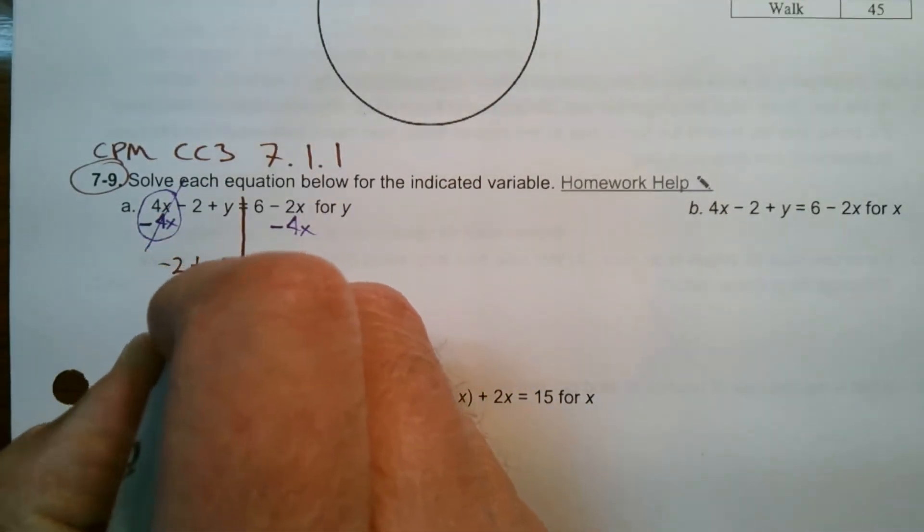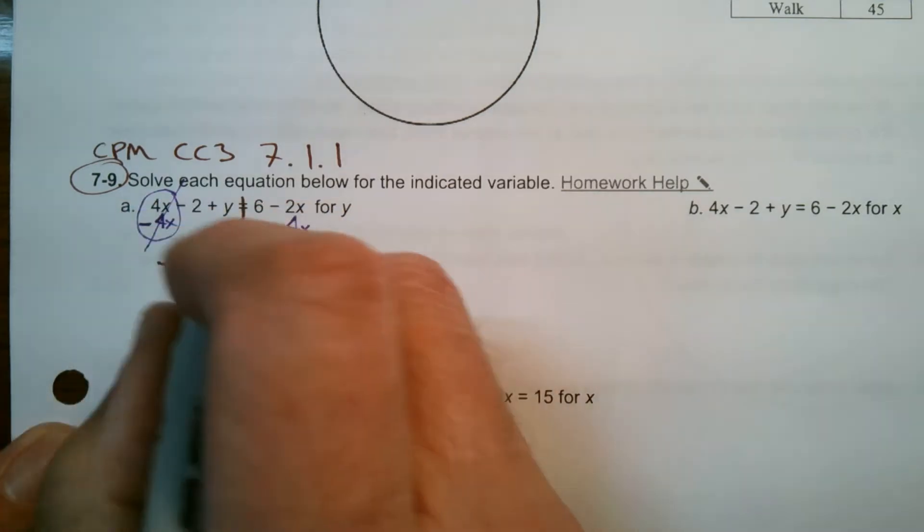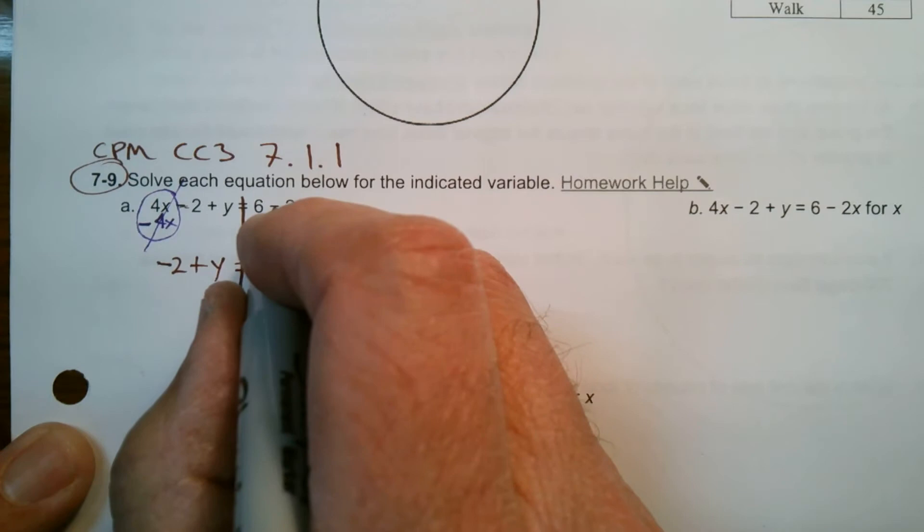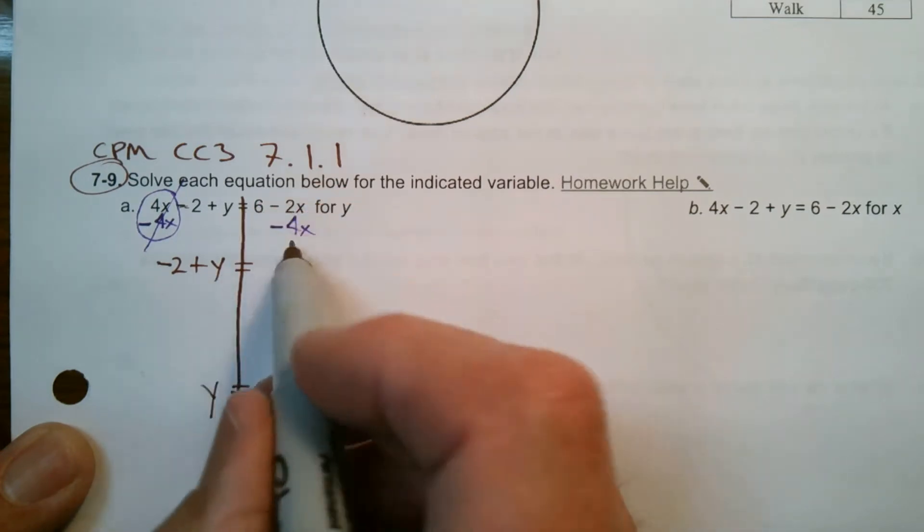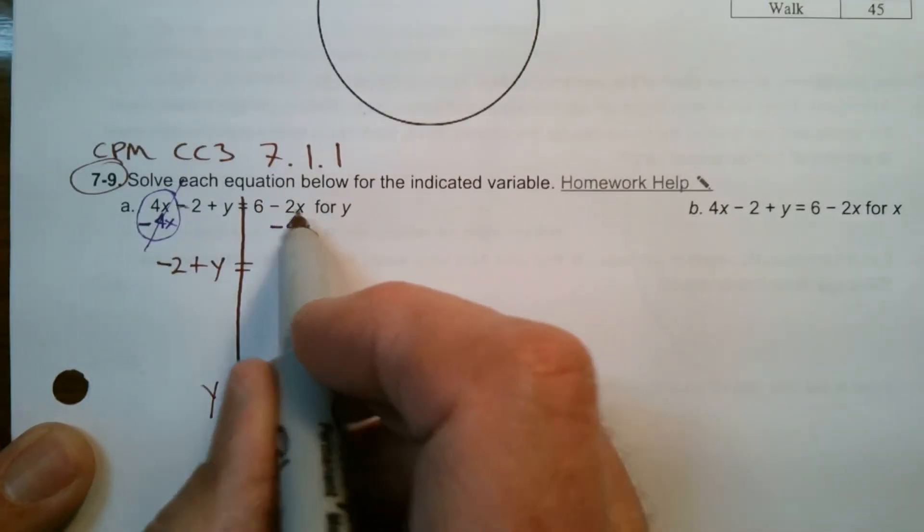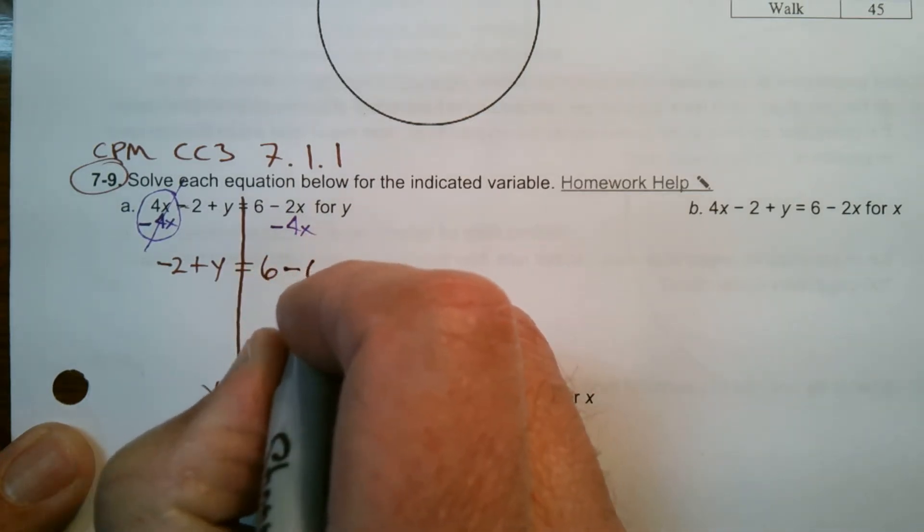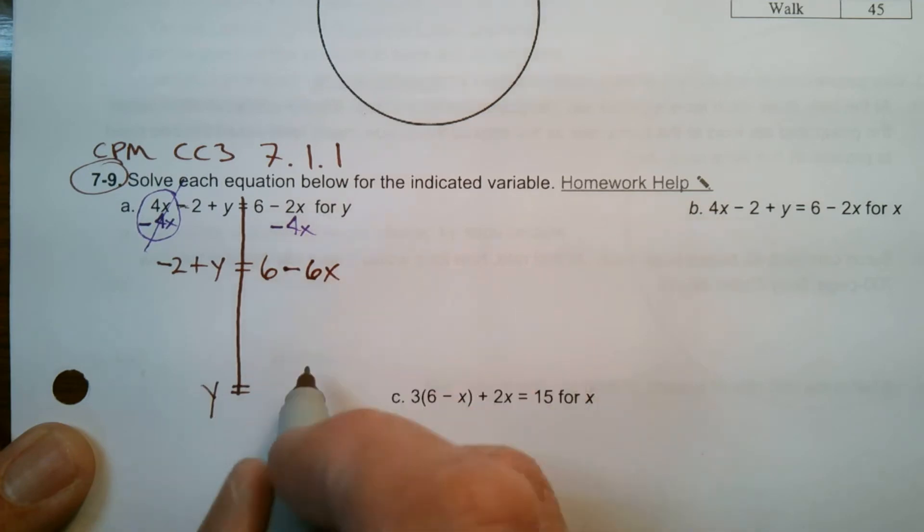So now I've got negative 2 plus y is what's left over here. That minus 2 becomes now a negative 2 is equal to, and this, I have a negative. Don't forget the sign in front is important. That minus 2x really looks at it as a negative 2x and negative 4x. So I currently have 6 minus 6x or 6 plus negative 6x.